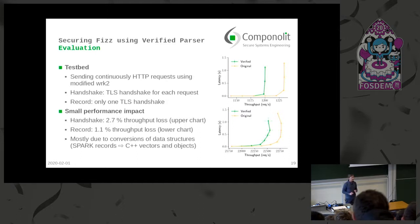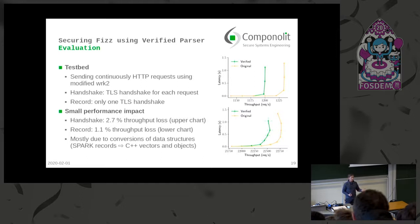We only looked at a simple TLS record message, but there are more complicated TLS messages with sequences of messages which can contain further sequences. These are represented in FIS with C++ vectors and objects, which of course are not compatible with Spark. The required conversions account for the performance overhead.